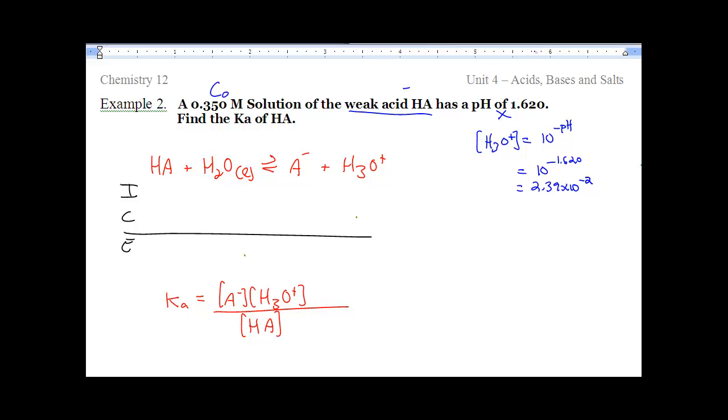So that goes into our ICE table. So the initial concentration is 0.350. We're ignoring that column. That's 0 and 0. At equilibrium the concentration of H3O was that 2.3 times 10 to the negative 2 number goes everywhere in our ICE table. These are increasing by that number. HA is decreasing by that number. Well this is going to end up at 2.39 times 10 to the negative 2.